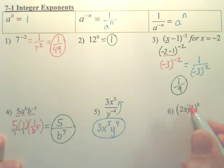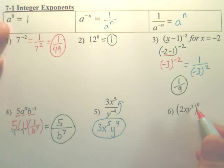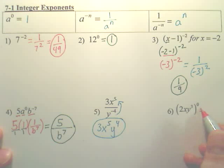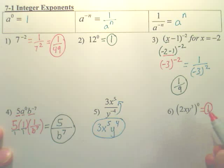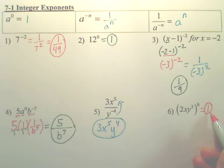And number 6 here is this whole thing to the 0. Well, kind of funny is this whole thing to the 0. It doesn't matter what's inside of here because this whole thing is going to be the 0 power. And what we said is anything to the 0 power is 1. So, dumb kind of question, but the answer is simply 1 because this whole thing is to the 0 power, so it is 1.